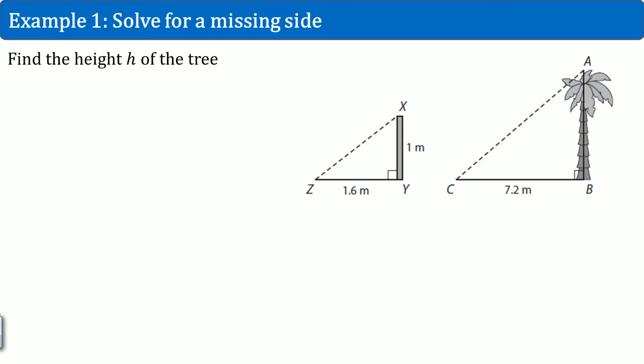Example one, you're going to solve for a missing value here. Here, you have a block of some kind and it casts a shadow that is 1.6 meters. And you're going to have a tree up there that casts a shadow of 7.2 meters. You're trying to look for the height of this tree.